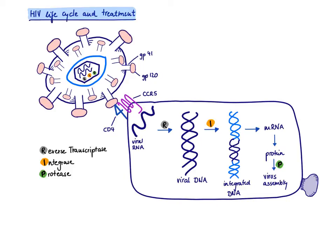HIV is a retrovirus. 'Retro' means reverse direction — we normally store genetic material as DNA, but HIV stores it as RNA. To convert that RNA back into DNA, HIV brings with it a reverse transcriptase, a DNA polymerase that is able to make DNA out of RNA.